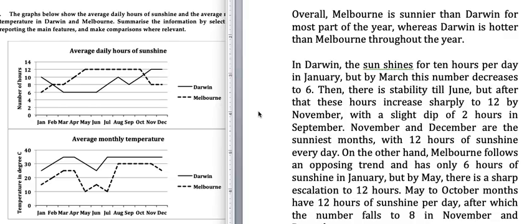Hello students, today I will be explaining this line graph to you. It has been seen in the past in the academic IELTS writing test. The graphs below show the average daily hours of sunshine and the average daily temperature in Darwin and Melbourne. Summarize the information by selecting and reporting the main features and make comparisons where relevant.